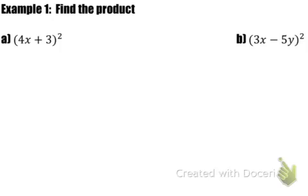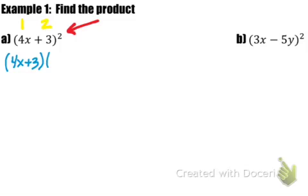In the first example we're going to find the product. In part A we have the quantity 4x plus 3 squared. When we have one term as 4x and the second term as 3, we consider that a binomial. Notice how we're raising that entire quantity to the second power, which means we're multiplying 4x plus 3 by itself. A popular method to multiply out two binomials is the box method, which helps students organize their work and visually see what monomials are distributing to each other, making sure they cover all their bases.